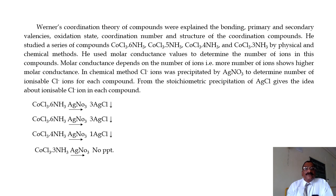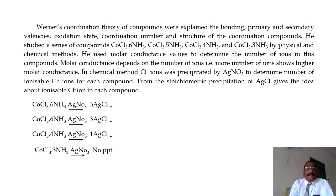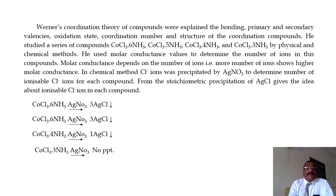For the first reaction, CoCl3·6NH3, when treated with excess AgNO3, it gives only a precipitate of three AgCl, meaning only three Cl⁻ ions are ionizable. For the second reaction, CoCl3·5NH3 treated with AgNO3, it also gives three AgCl. For the third compound, CoCl3·4NH3, when treated with excess AgNO3, it gives a single AgCl precipitate. And the fourth compound, CoCl3·3NH3, when treated with excess AgNO3, does not give any precipitate.